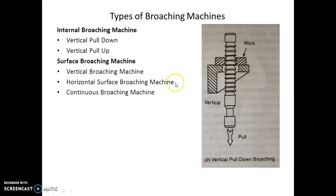Next we'll discuss various types of broaching machines. There are internal broaching machines of vertical pull-down and vertical pull-up, and then surface broaching machines like vertical broaching machine, horizontal surface broaching machine, continuous broaching machine. About vertical pull-down broaching machine, as it is represented in this diagram, in these machines the broach, instead of being pushed, is pulled through the job.